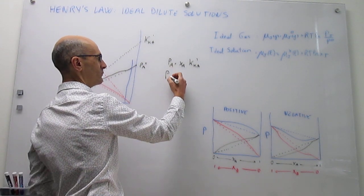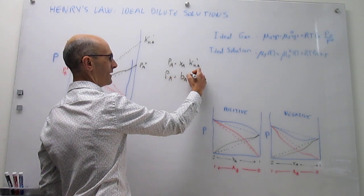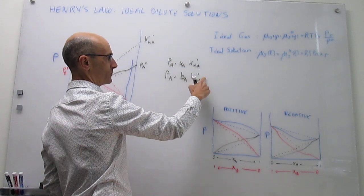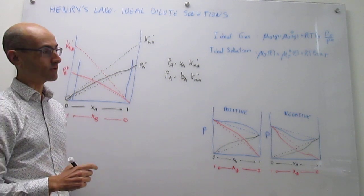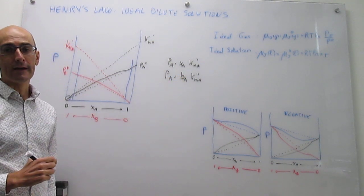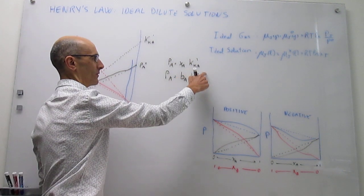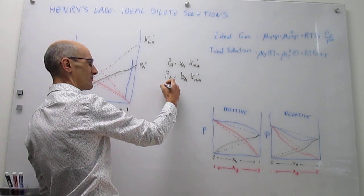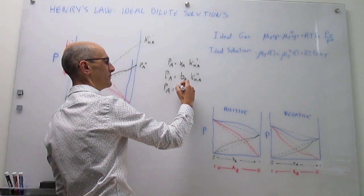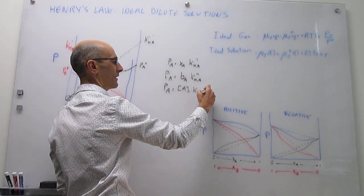The version that depends on molality would be: p_A equals the molality of A times a different Henry's constant. These constants are proportional to each other because in the dilute limit, mole fraction and molality are directly proportional to each other, so these constants are also proportional to each other.